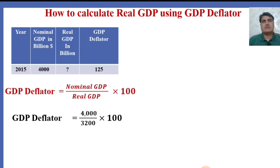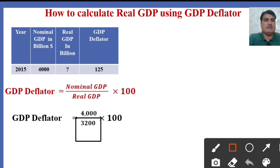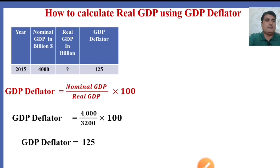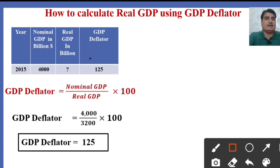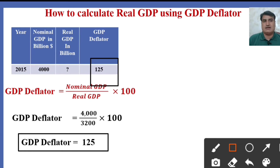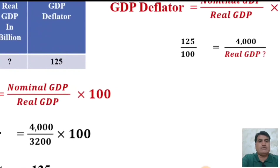The data given is nominal GDP $4000 billion. The real GDP is not given — it is a question mark. We have found it to be $3200 and we shall prove GDP Deflator will be $125 as already given. GDP Deflator is $125 over $100, meaning the prices in the base year were $100, and now prices have risen to $125 — that is, prices have risen by 25%.